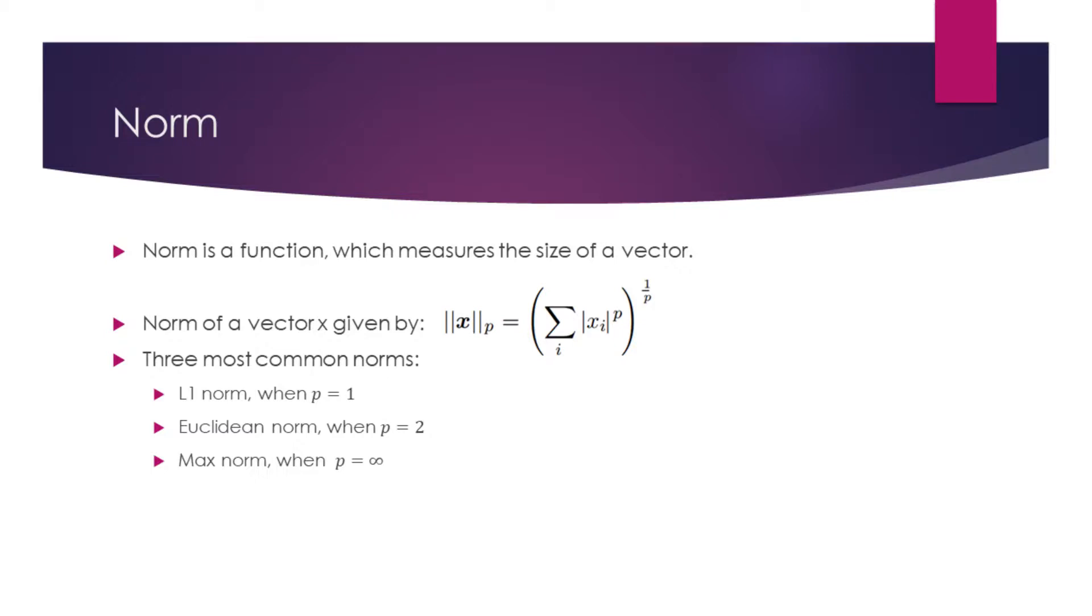Norm is a function which measures the size of a vector. You can see the formula of this function on the slide. This formula implies to sum the absolute value of each element raised to the power p, and raise the result to the power 1 over p.